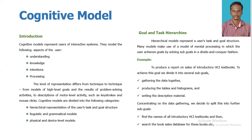Hierarchical models represent a user's task and goal structures. Many models make use of a model of mental processing in which the user achieves goals by solving sub-goals in a divide and conquer fashion. For example, to produce a report on sales of introductory HCI textbooks, we have to divide this goal into several sub-goals.